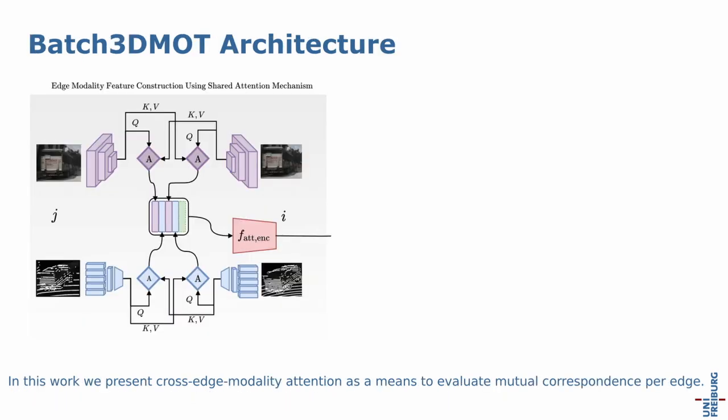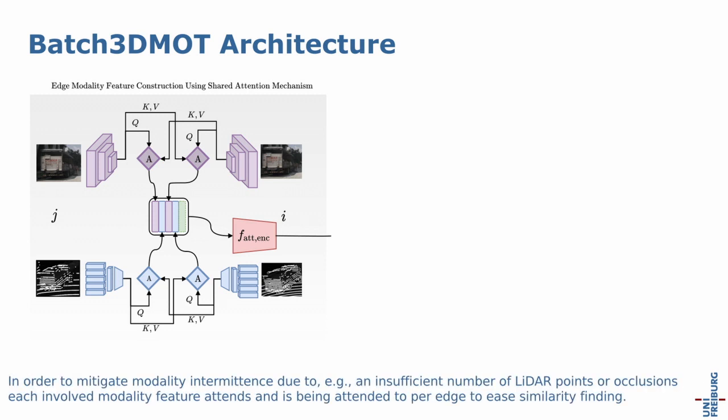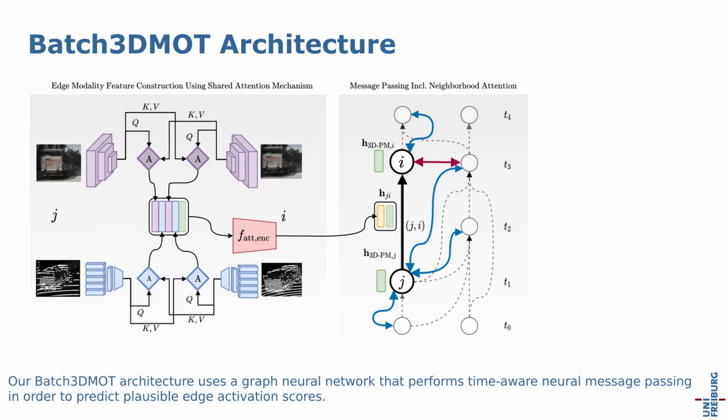In this work, we present cross-edge modality attention as a means to evaluate mutual correspondence per edge. In order to mitigate modality intermittence due to, for example, an insufficient number of LiDAR points to be used for feature crafting or occlusions, each involved modality feature attends and is being attended to per edge to ease similarity finding.